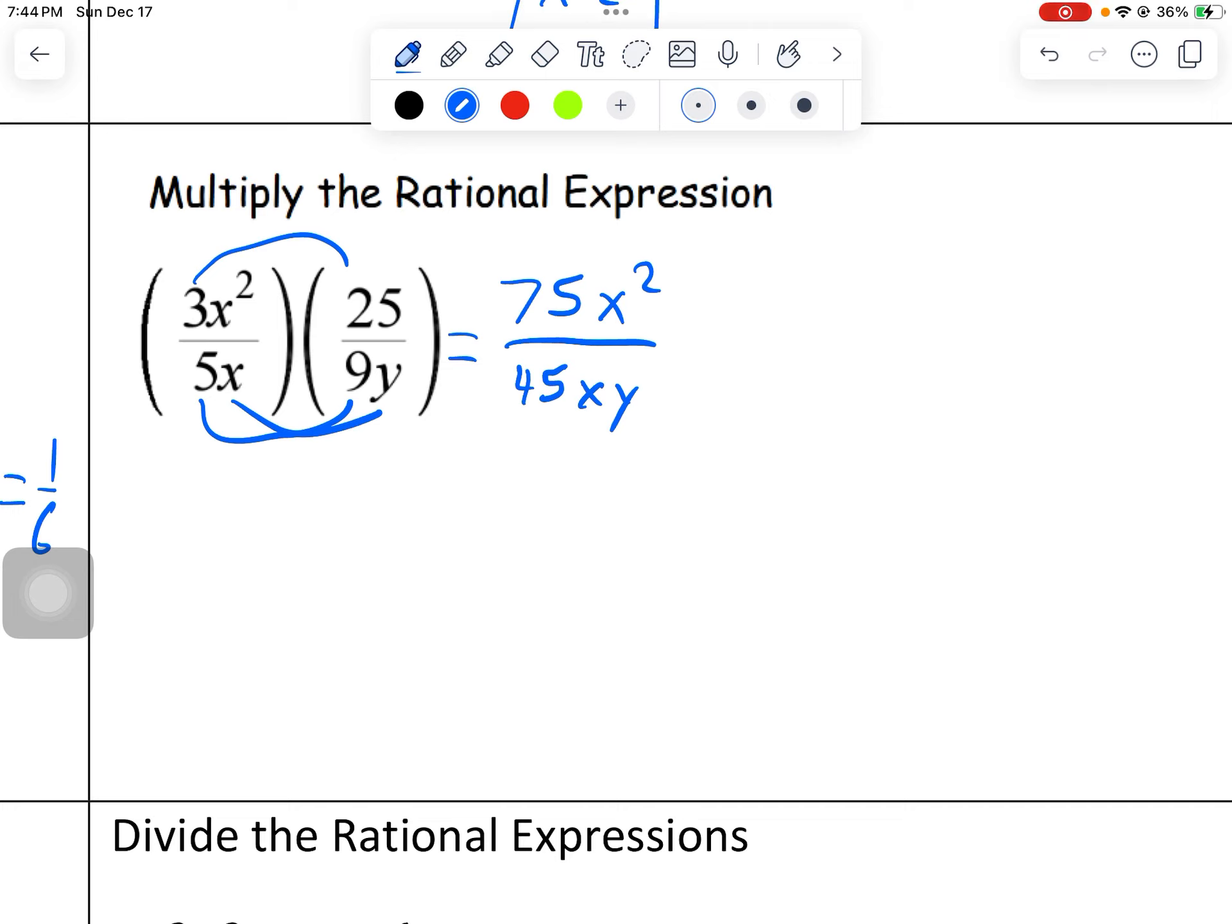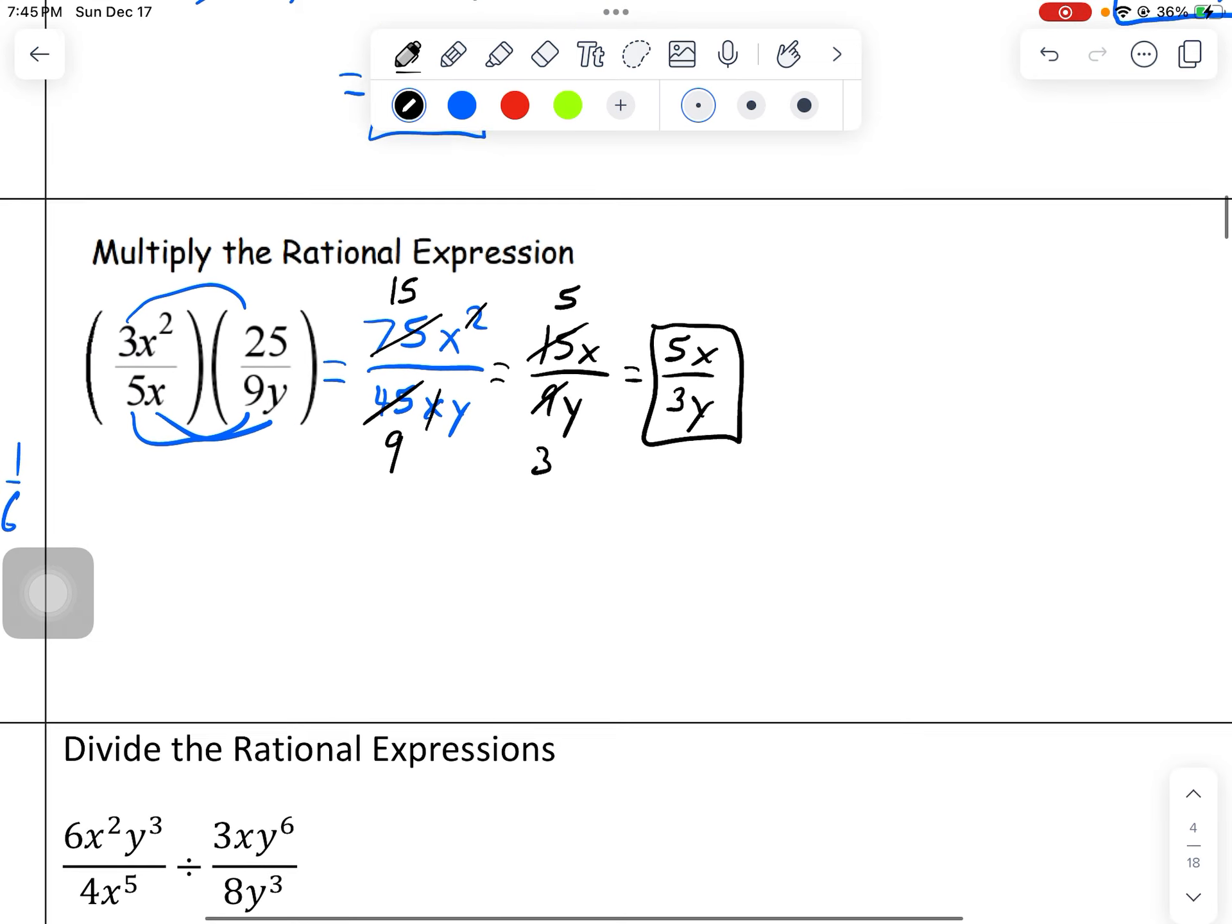Here we have 5 times 9, which is 45, and then x times y. Now this turns into a problem like what we were doing in the previous lesson. Look for numbers that divide into 75 and 45. We know that 5 divides into both of them. So if we divide each of them by 5, we'd be left with 9, and then 75 divided by 5 is 15. And then we can also take out an x. So I'd have 15x over 9y. I forgot that 15 goes into both of them. So take a 3 out of each of these, left with 5, 3, and my final answer is 5x over 3y.